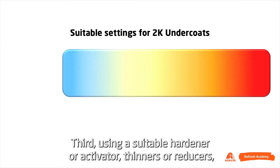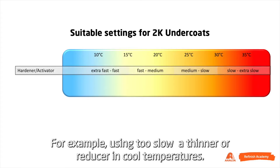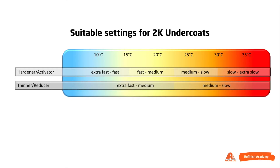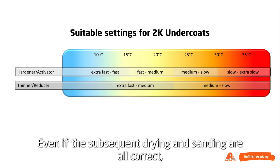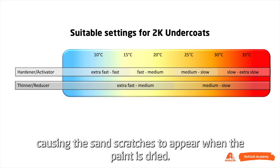Third, using an unsuitable hardener or activator, thinner, or reducer. For example, using too slow a thinner or reducer in cool temperatures. Even if the subsequent drying and sanding are all correct, the solvents retained in the film could swell the undercoat, causing the sand scratches to appear when the paint is dried.